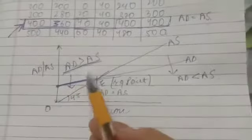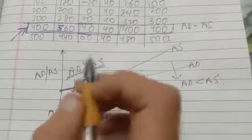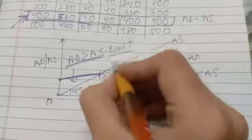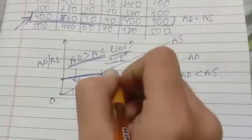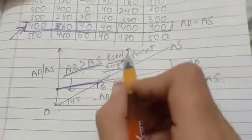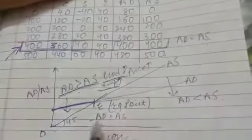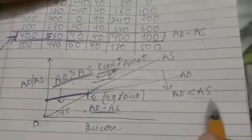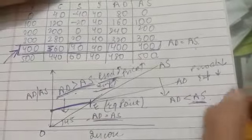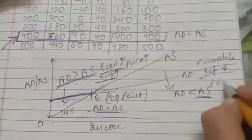To the left of E, aggregate demand is greater than aggregate supply. When demand exceeds supply, producers will increase production, hire more employees — so employment rises — and prices also rise. To the right of E, AD is less than AS. When there is no demand for your product, you reduce production, lay off workers, and prices fall. So production, employment, and price all decrease.